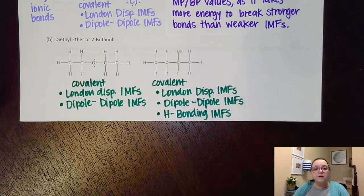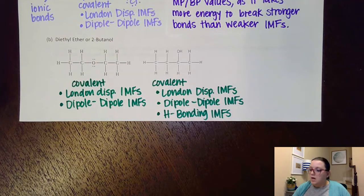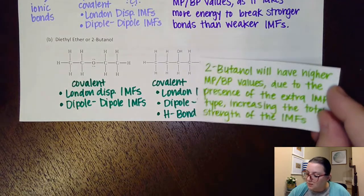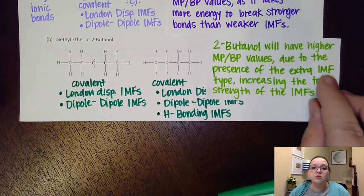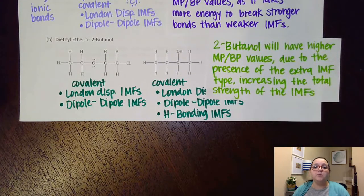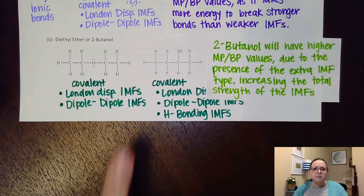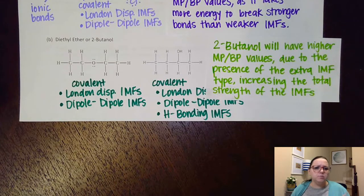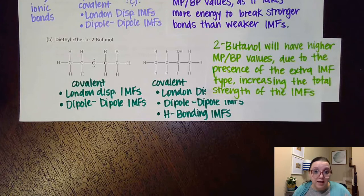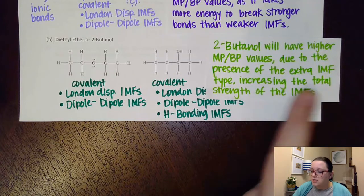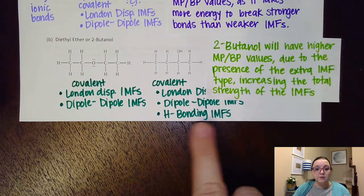So now if I'm trying to figure out who's got the higher melting boiling points, I would probably jot down something like this. I would say the 2-butanol would have the higher melting point, boiling point values, because these were both about the same size, meaning their London dispersion forces would be about the same because they have the same number of electrons. There's not one that's more polarizable than another.